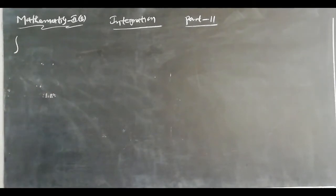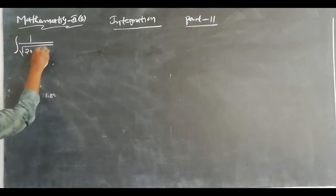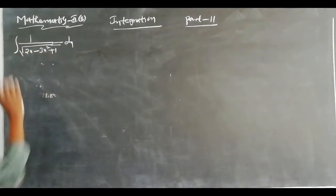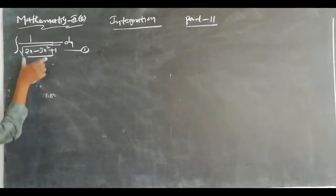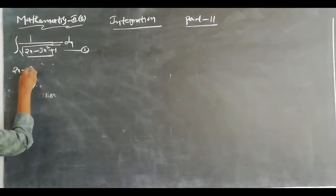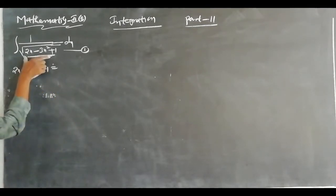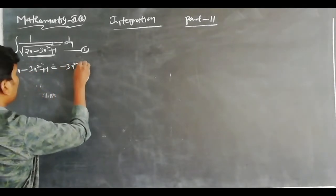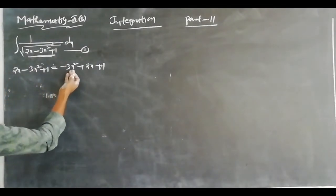Now let's solve a problem: ∫1/√(2x - 3x² + 1) dx. This is a Method 2 problem — there is an integral with a square root in the denominator. The expression 2x - 3x² + 1 can be rewritten in standard quadratic form as -3x² + 2x + 1, matching ax² + bx + c.